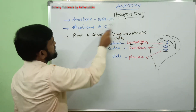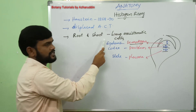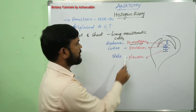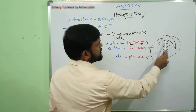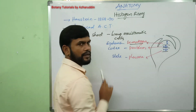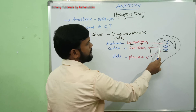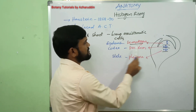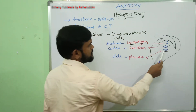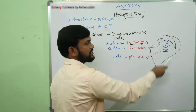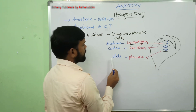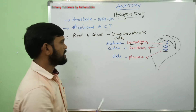Coming to histogen theory: Hanstein said that in the root and shoot apex, a group of meristematic cells are present and they are divided into three zones — dermatogen, periblem, and plerome. Dermatogen is the outermost layer in which cells divide anticlinally to form epidermis. Middle zone periblem has cells that divide anticlinally and periclinally to form cortex. The third zone, plerome, is the innermost zone containing a massive meristematic tissue which divides to produce stele.